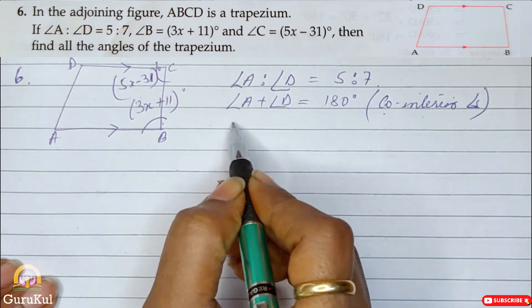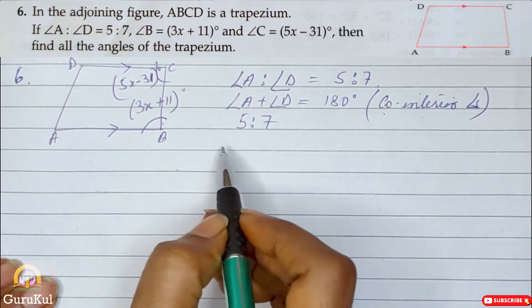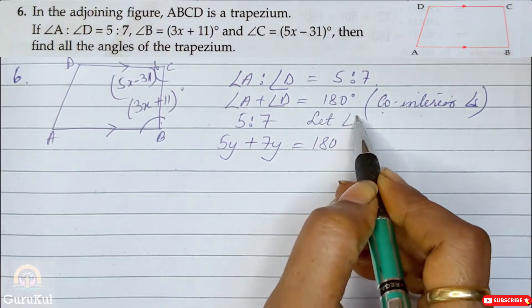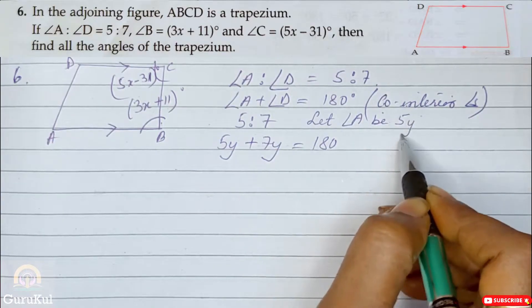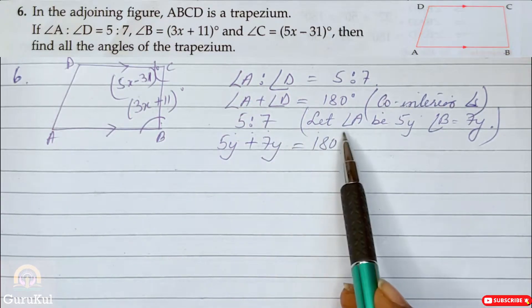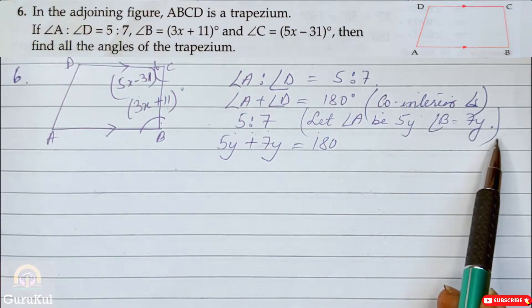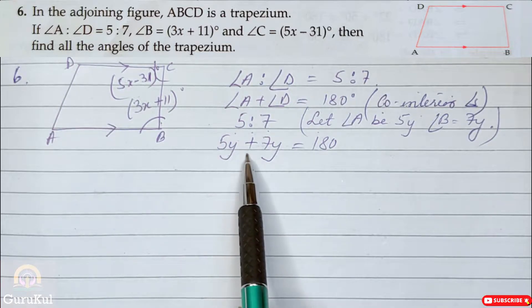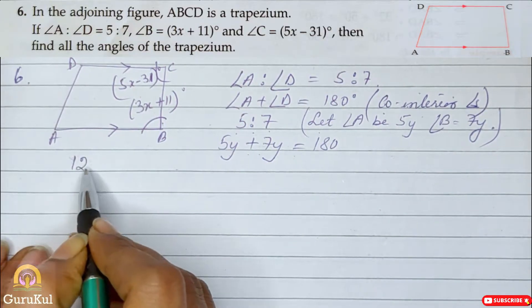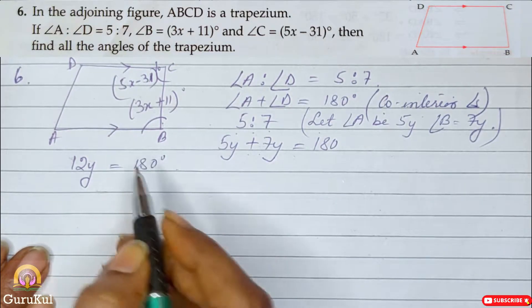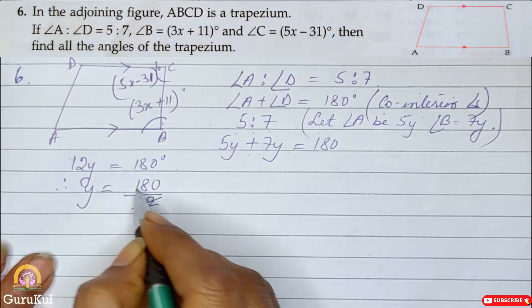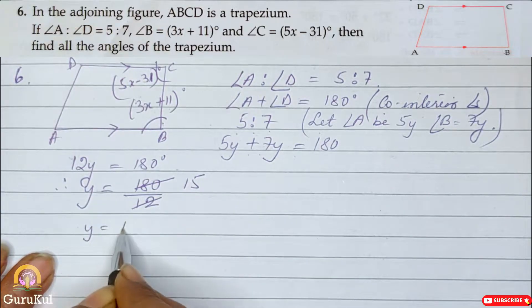So now we will do what is the ratio? The ratio is 5 is to 7. So we are going to write this way. Angle A is to angle D which is 5 is to 7. So let angle A be 5y and angle D be 7y. Now we will evaluate this way. So 5y plus 7y should come to 180 degree. So 5 plus 7 is 12y is equal to 180 degree. Therefore, y is equal to 180 by 12. And on reducing, we got the value of y to be 15 degree.